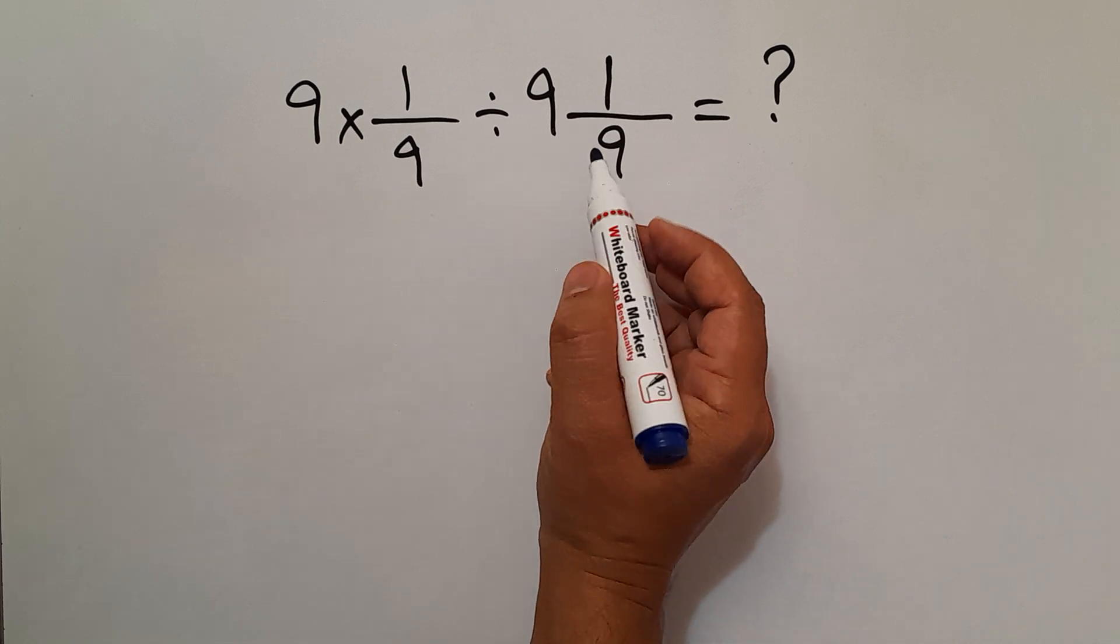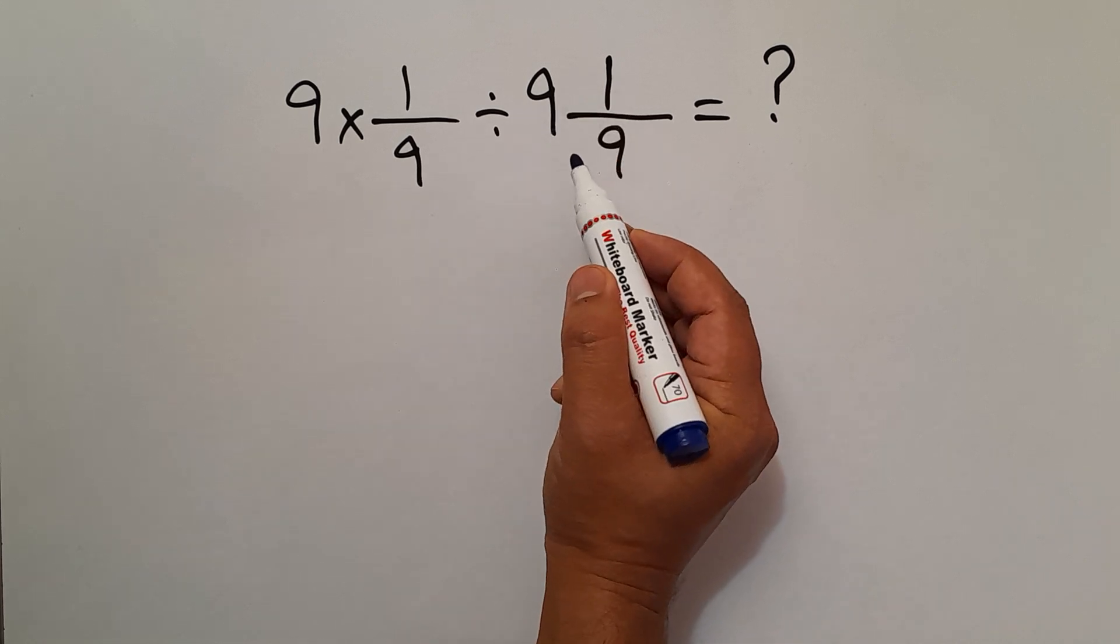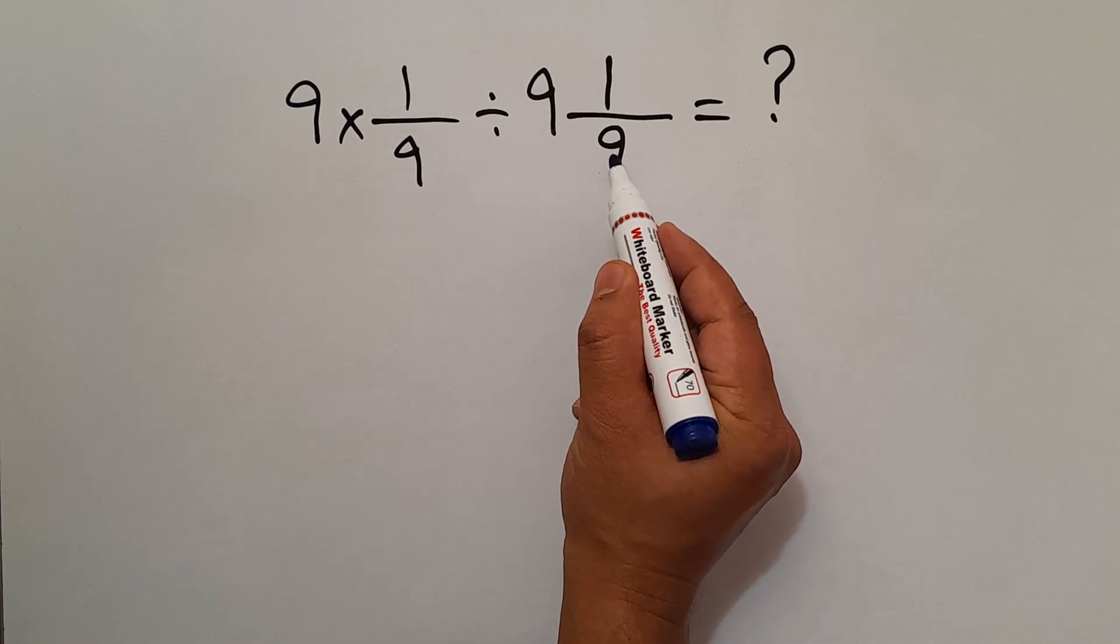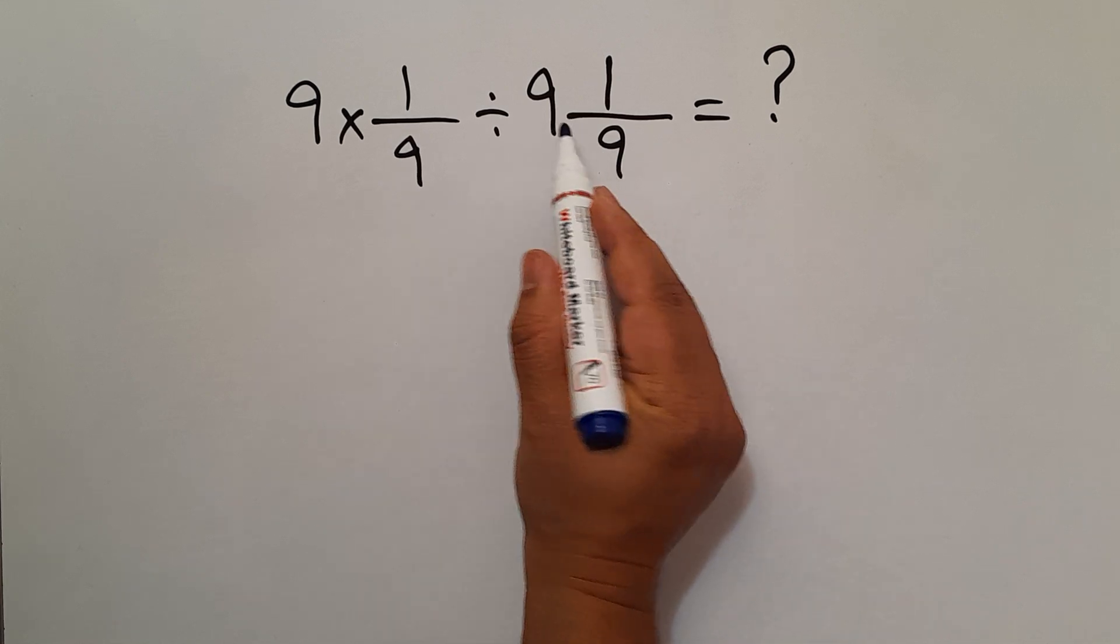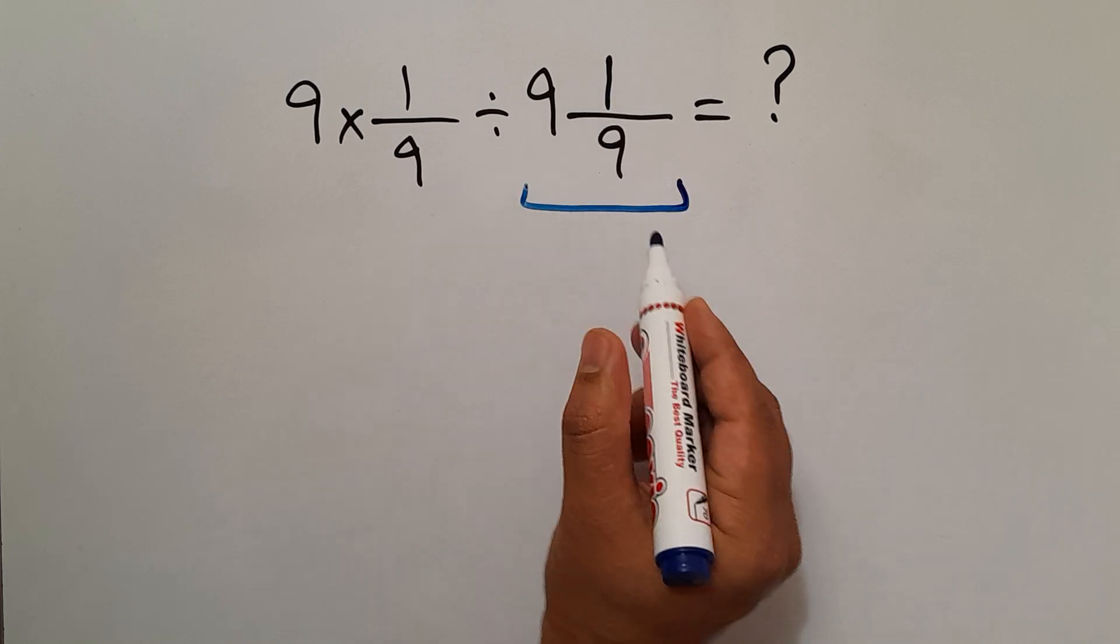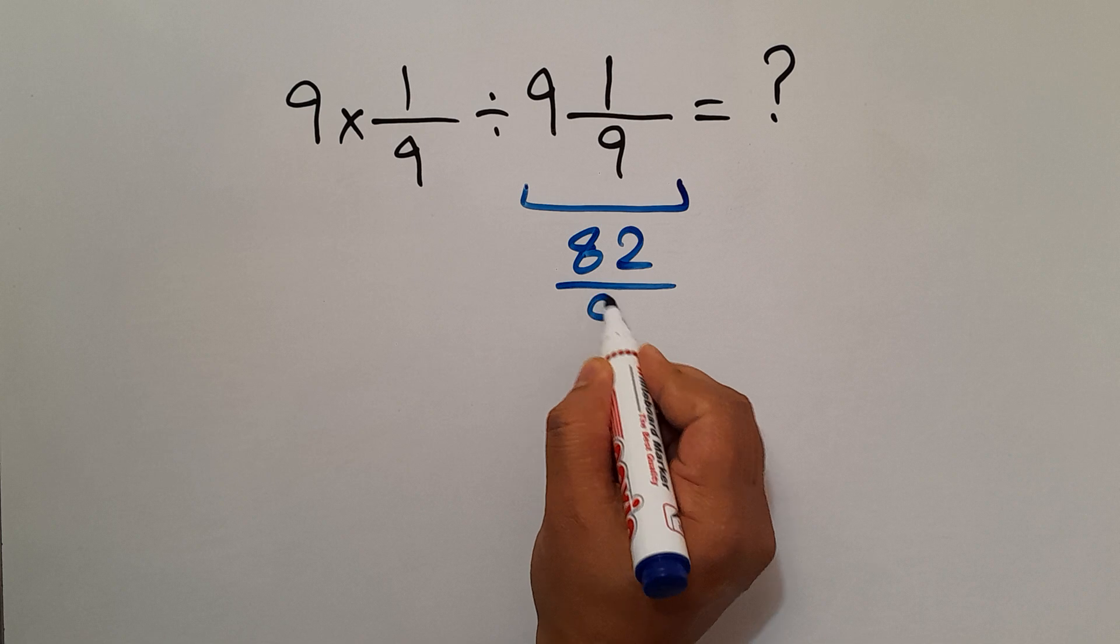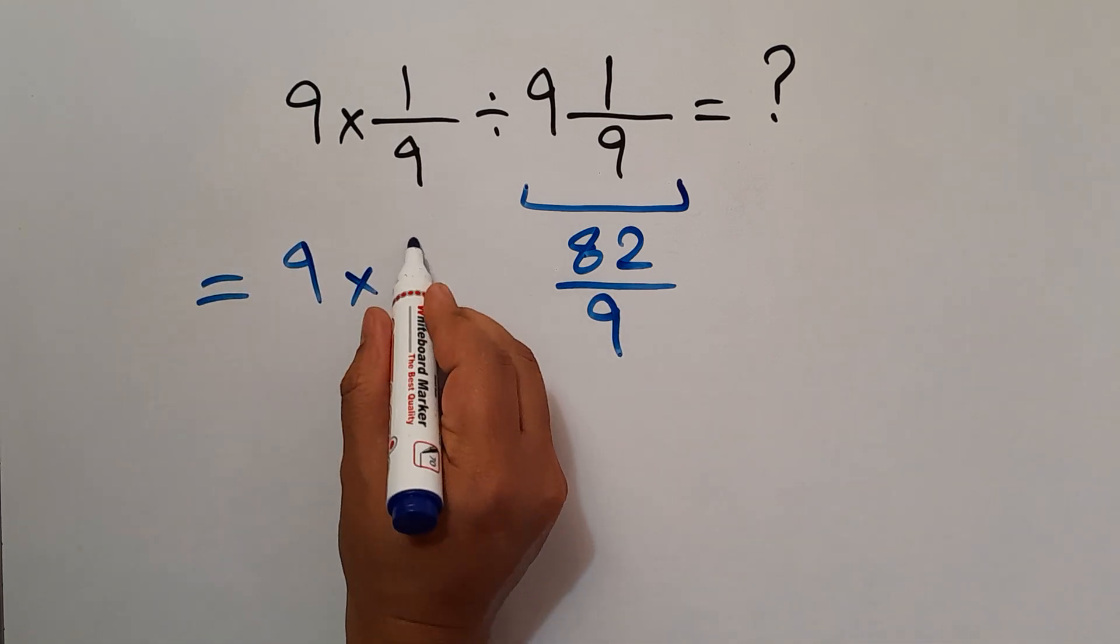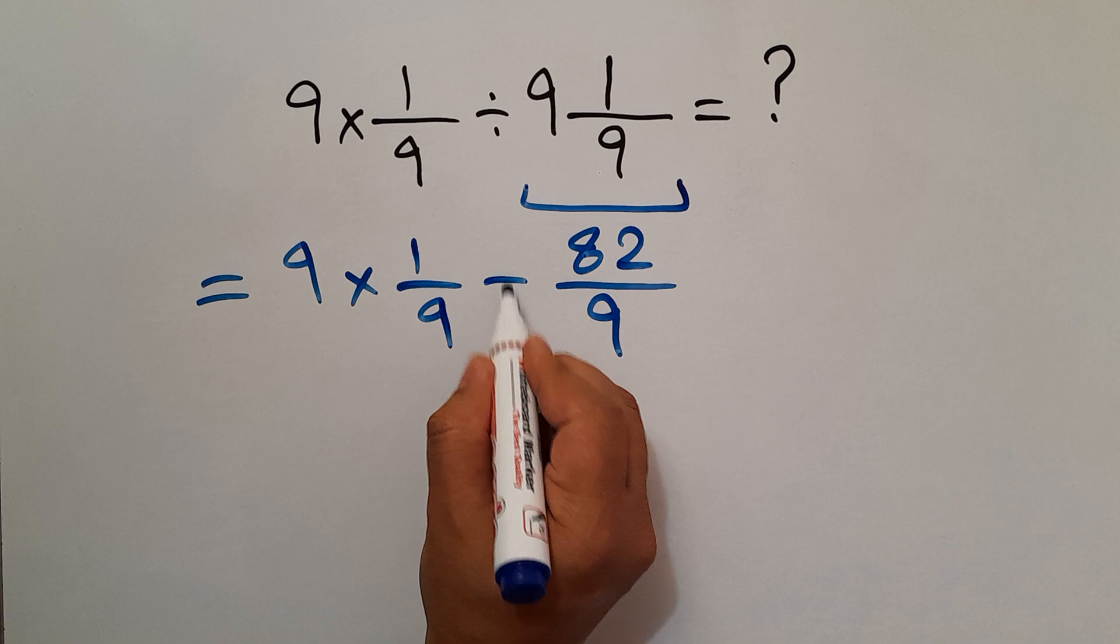First of all, let's change this mixed number to an improper fraction. 9 × 9 = 81, and 81 + 1 = 82, so we can write 82/9. We have 9 × 1/9 ÷ 82/9.